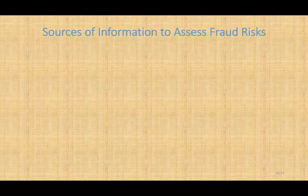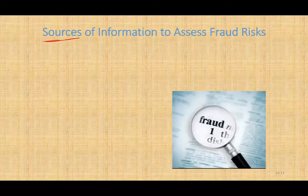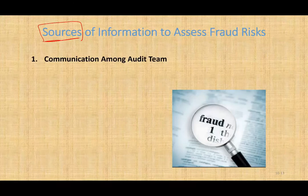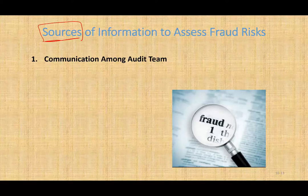Now, as we are assessing fraud, we need to know what are the sources of information — we need to assess if there are any fraud risk factors. Where do we look for information? We're going to look at five different places. First, we're going to communicate among the audit team — basically the audit team, the staff, maybe the manager, even the partner if involved, are going to communicate amongst each other. This is communication among the team, and I'm going to expand on this.